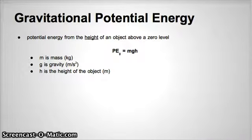Potential energy is specifically based on the height of an object above a zero level. The equation for gravitational potential energy is shown here. We can see that the mass of the object, force of gravity, and how high above a zero level the object is directly affects the resulting potential energy.